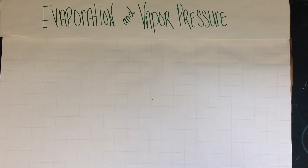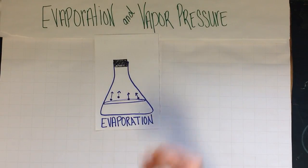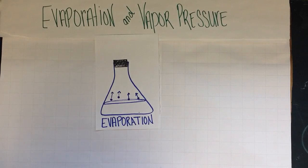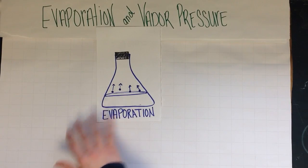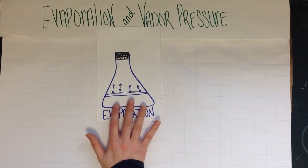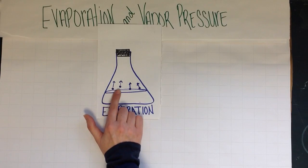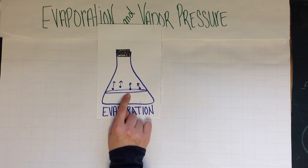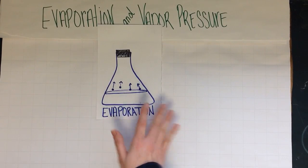What's important to know is that vapor pressure can occur as long as you have vapor. So let's look at this scenario: I've got an Erlenmeyer flask that's closed off right now. My liquid inside is evaporating — here are some molecules of water that gain enough energy and are leaving the surface. This is evaporation.